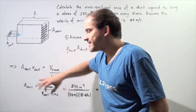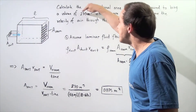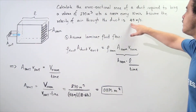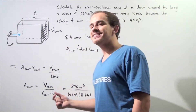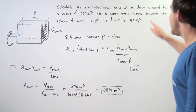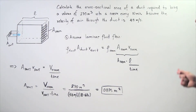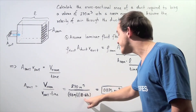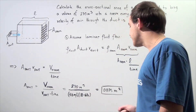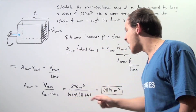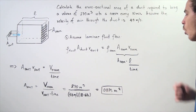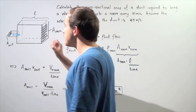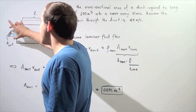The volume of the room is 270 cubic meters, and the velocity of air within the duct is 4 meters per second. The time is 10 minutes, which we convert to seconds: 10 times 60 equals 600 seconds. So we have 270 divided by 4 times 600, which gives us 0.1125 square meters as the cross-sectional area of our rectangular duct.